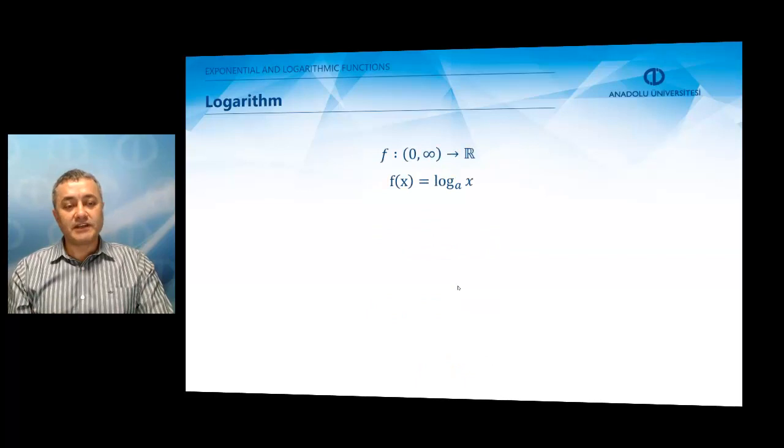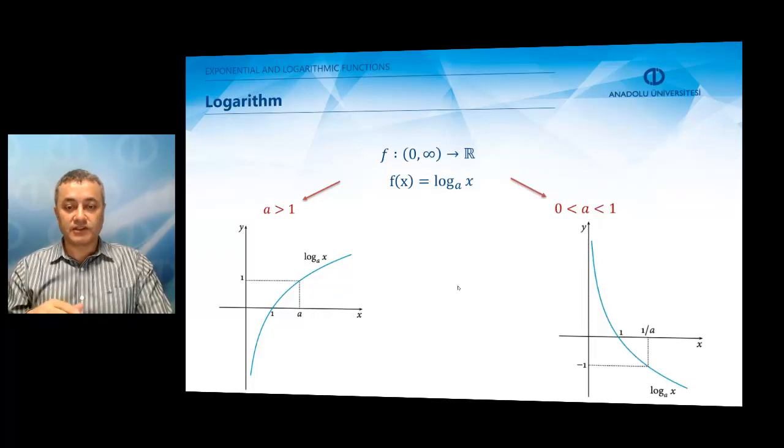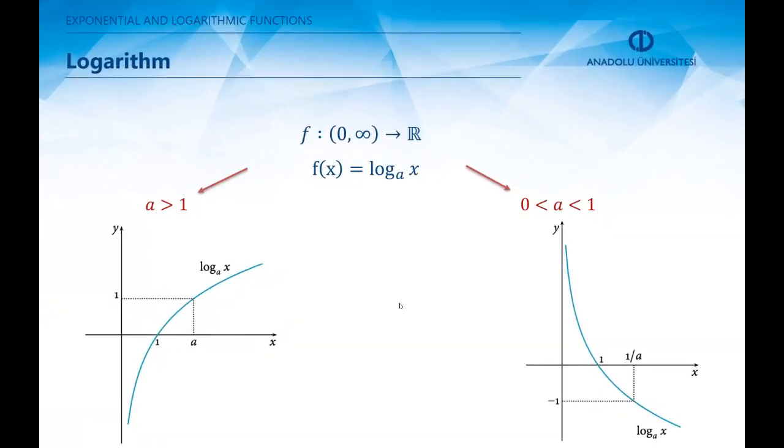Let us investigate the graph of the logarithmic function. If a > 1, we have an increasing logarithmic function. If a is between 0 and 1, we have a decreasing logarithmic function, the graphs of which you can see on the screen.